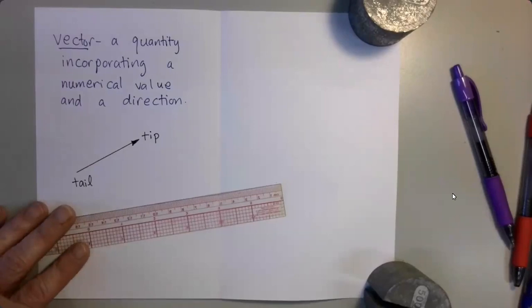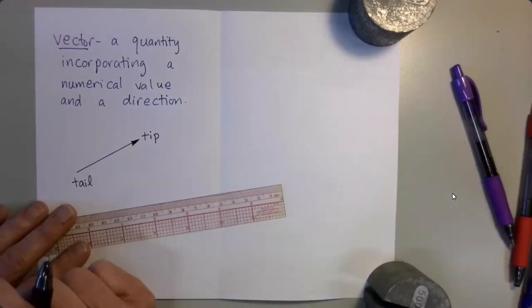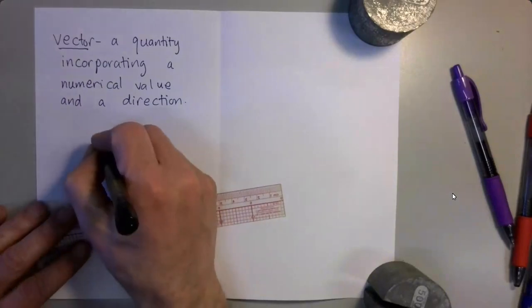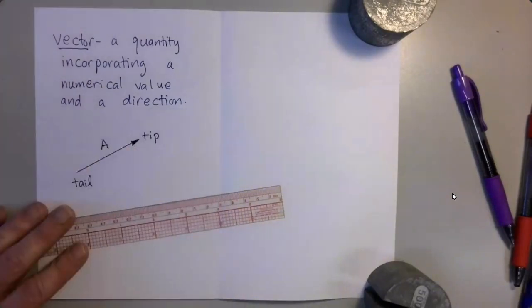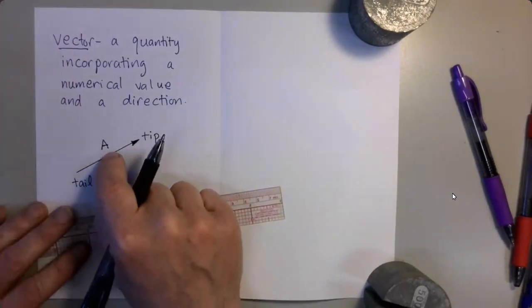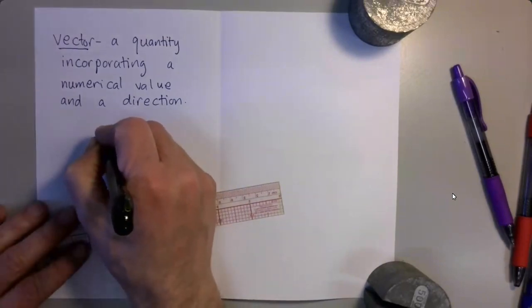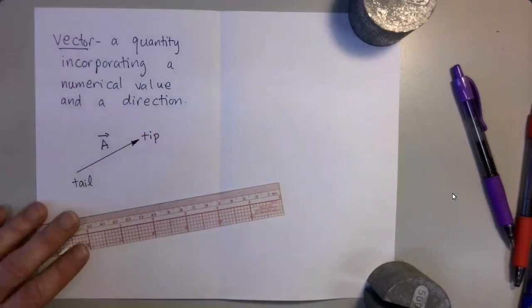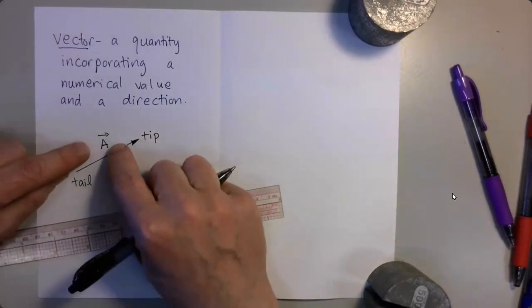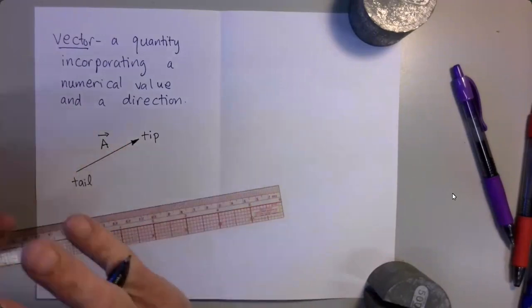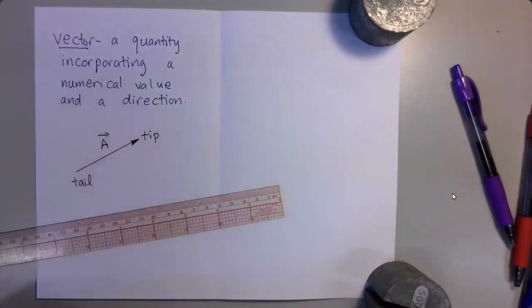Now let's say that we want to use a letter of the alphabet to represent the vector. So I might use the letter A, for example, but if I'm going to use a letter of the alphabet to represent a vector quantity, I must put an arrow on top of the letter. So the letter A with an arrow on top is a perfectly good way to represent a vector symbolically.